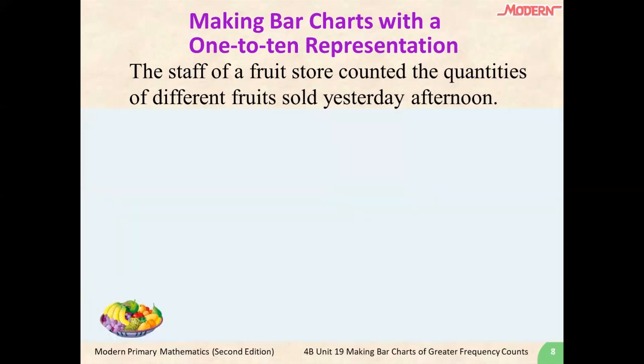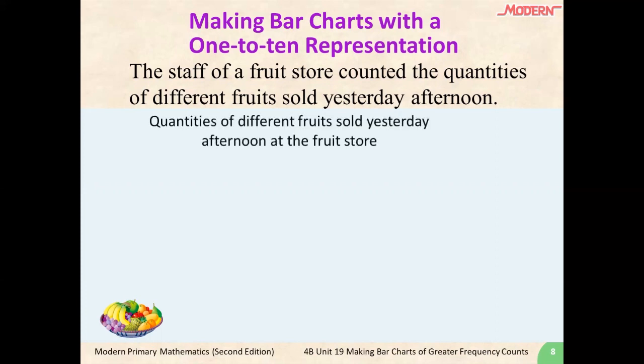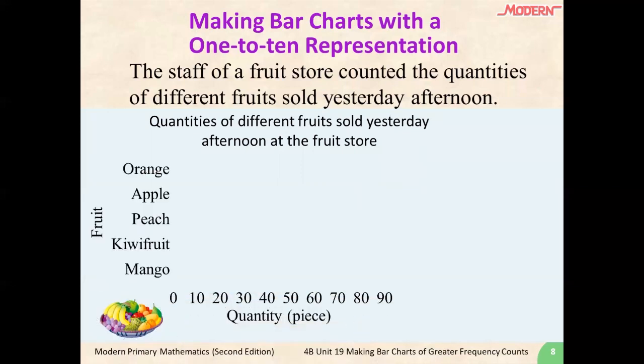Now, let's take a look at the bar chart that we made. First, we have to remember to add the title. For this example, our title will be: quantities of fruits sold yesterday afternoon at the fruit store. Next, we will have to mark the vertical and horizontal axis with the different fruits and the amount of fruits sold rounded to the tens place. Lastly, we have to add the corresponding bars to the bar chart.